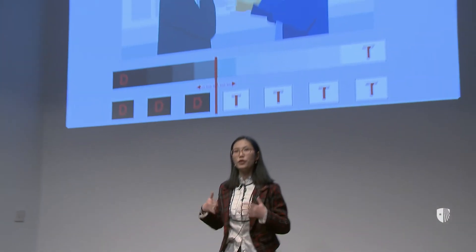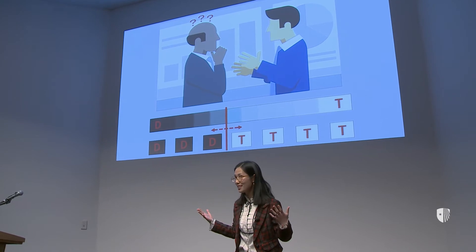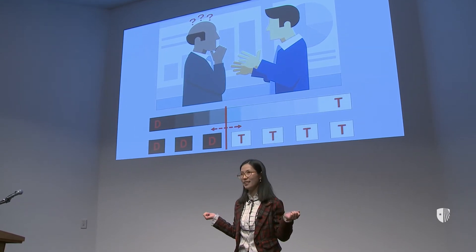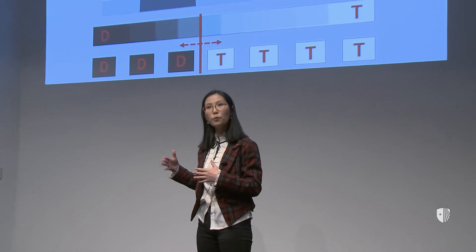So in my PhD, I study how people process natural language, and specifically, my dissertation is asking a challenging question: how do we understand foreign accents? Just like the person in the picture, when we first meet someone who speaks with a very heavy accent, we hardly understand anything. But after a while, we understand better. Why?